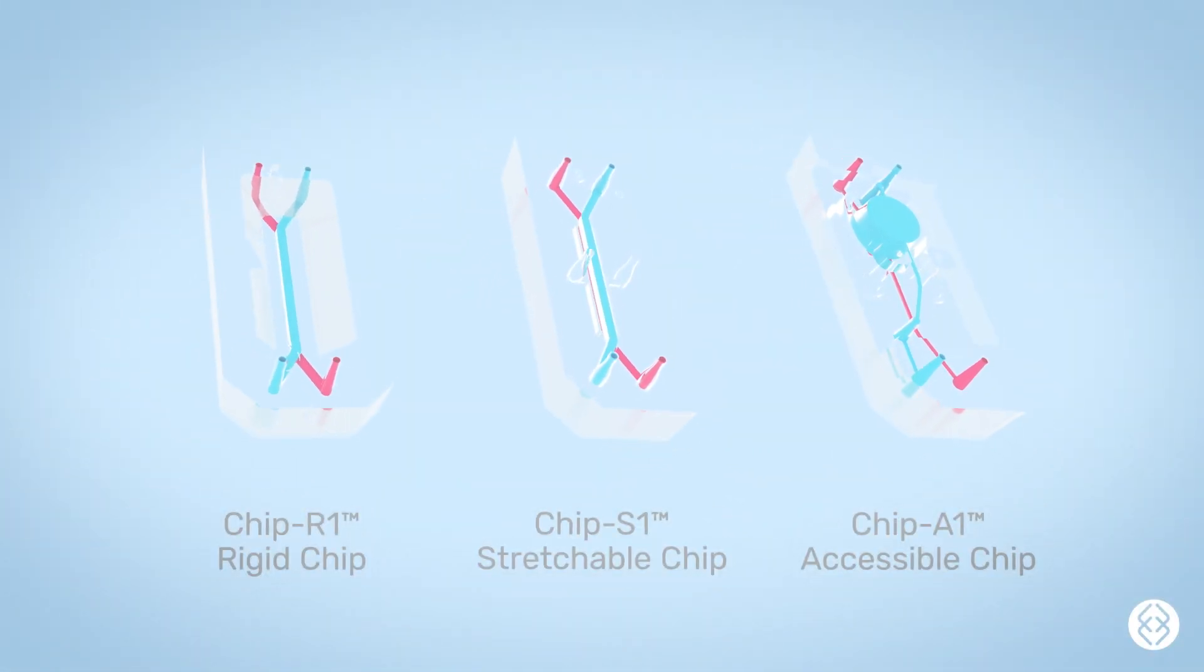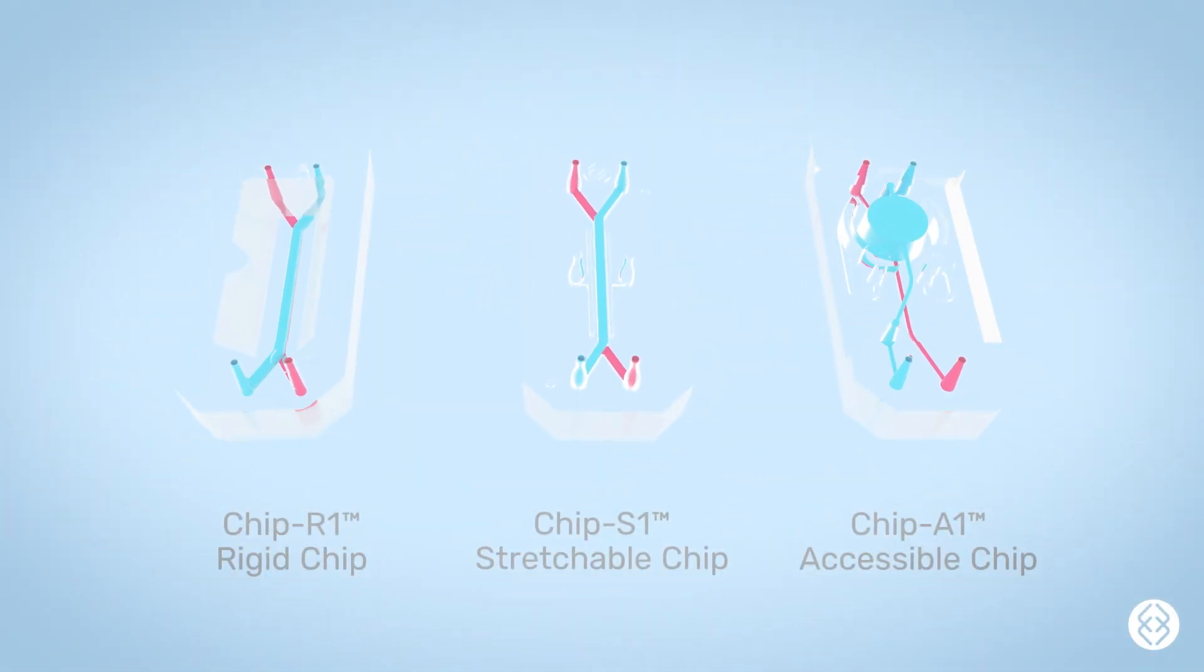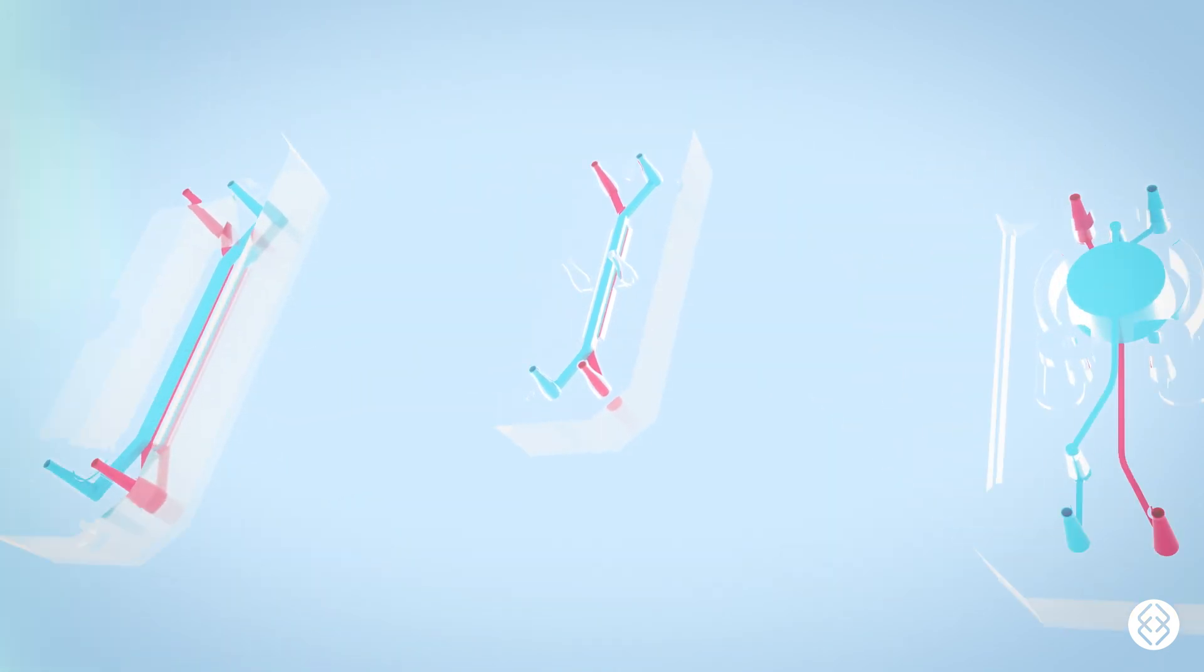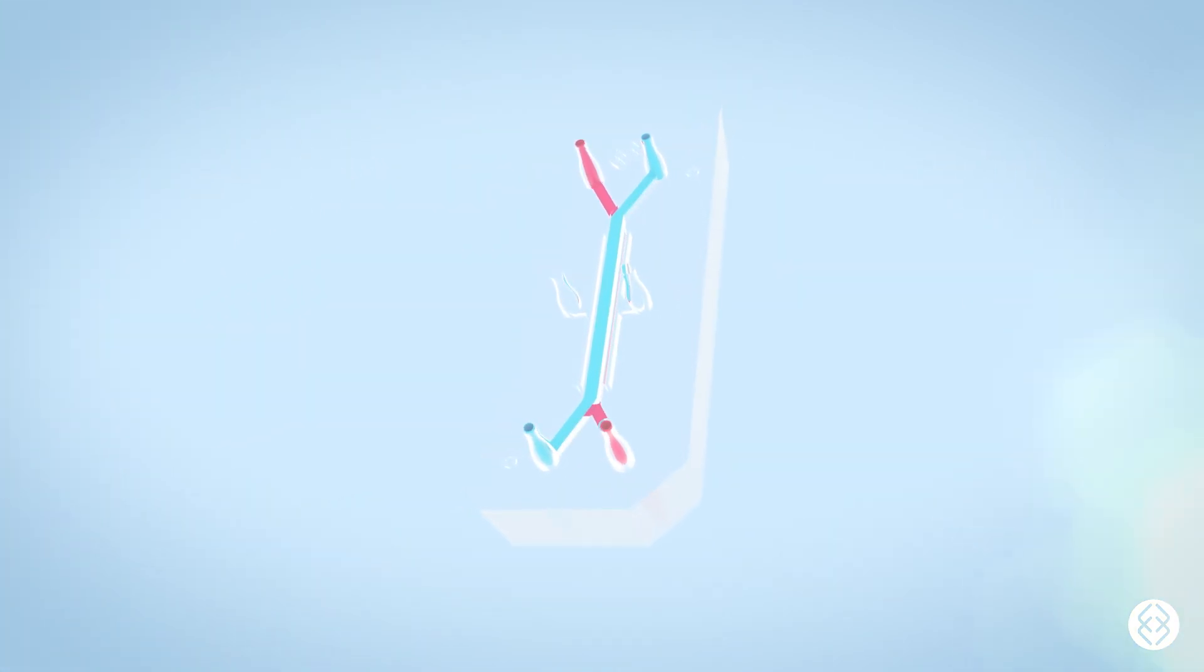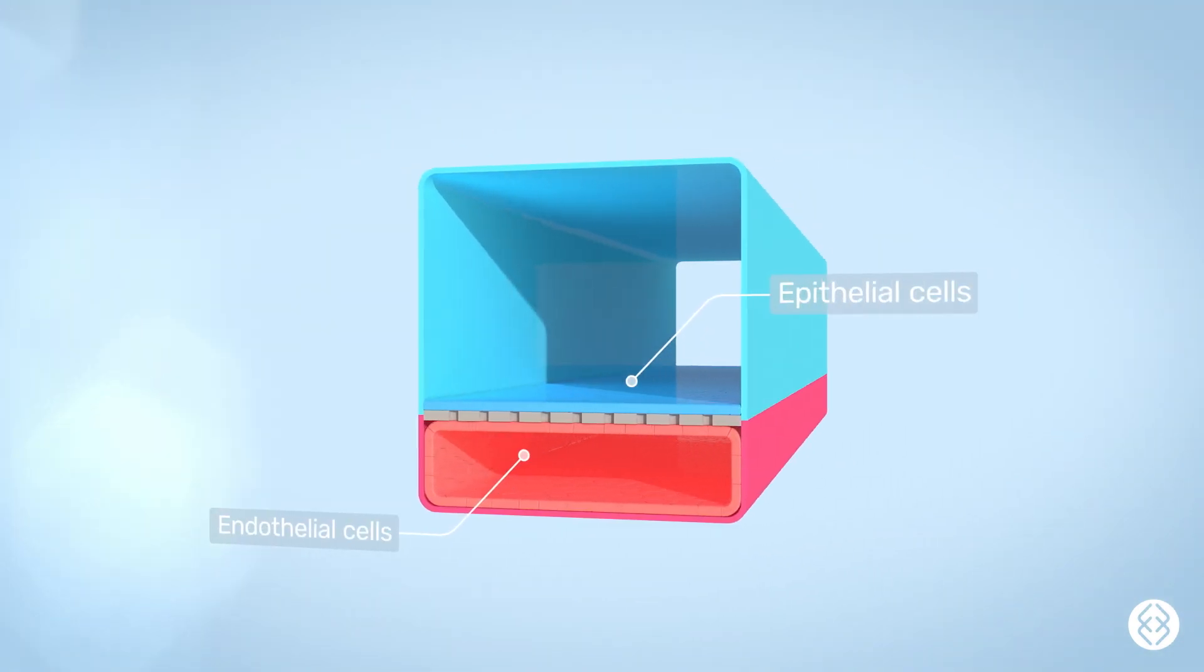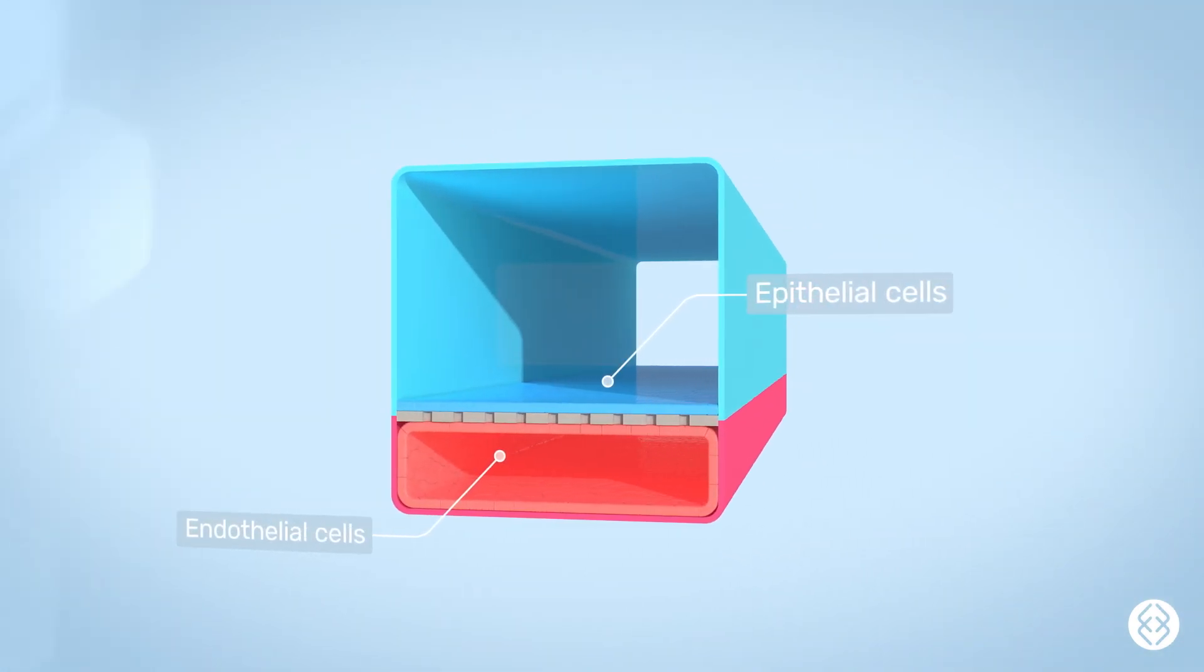The emulate organ chip portfolio enables users to recreate a wide variety of human tissues. Inside each chip S1 stretchable chip, there are two parallel microfluidic channels that contain a co-culture of primary human cells with a tissue vascular interface.